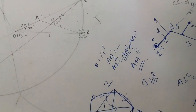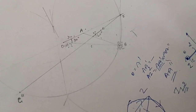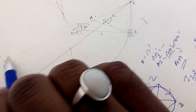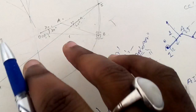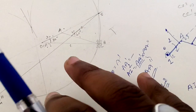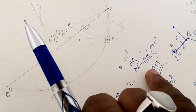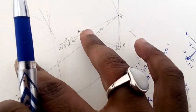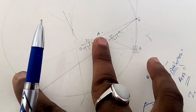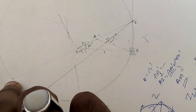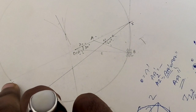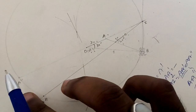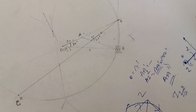AA-double-dash lies on the same line as A and I. Extend this line and, by calculating the value of AA-double-dash, measure that distance back from A along the line to locate point A-double-dash.